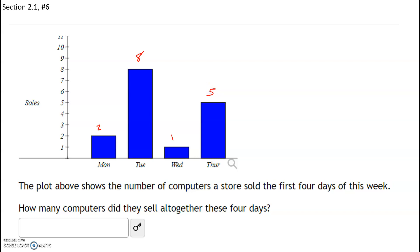So the total number of computers sold are 2 plus 8 plus 1 plus 5. And that's 10 plus 1 is 11 plus 5, that's 16 total computers.